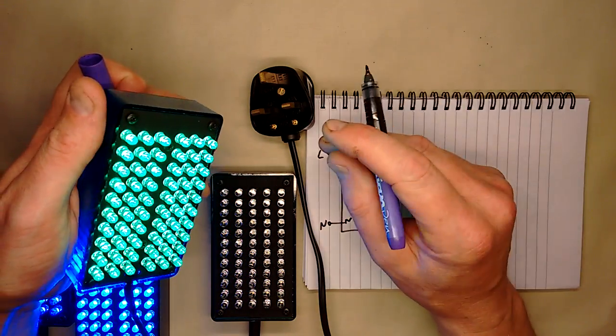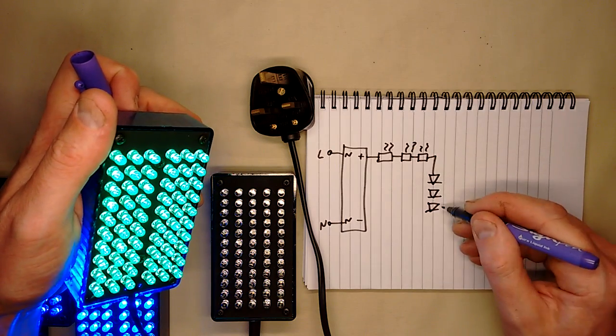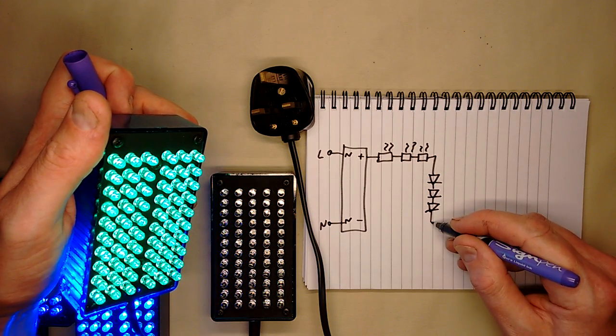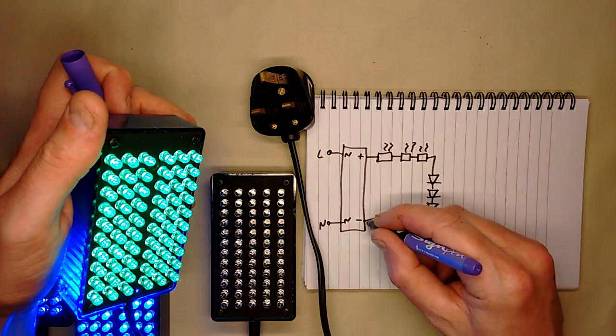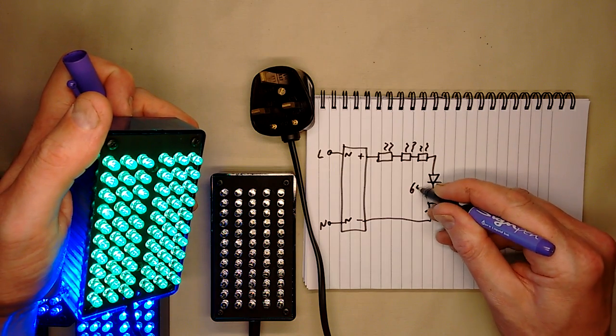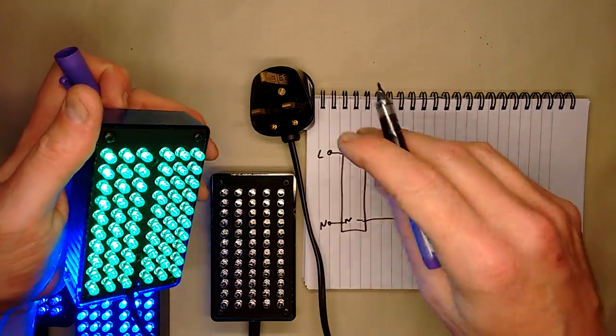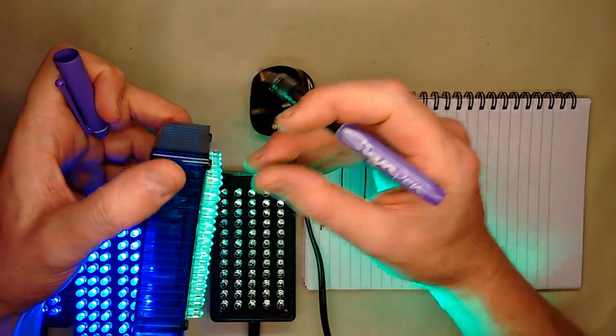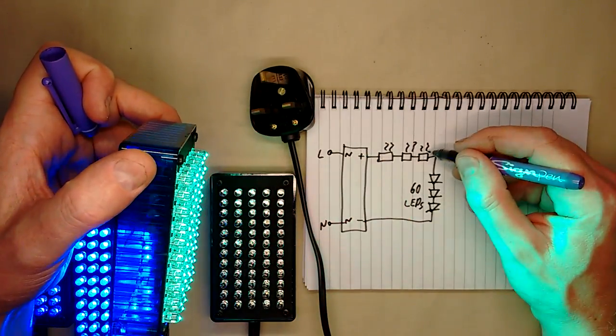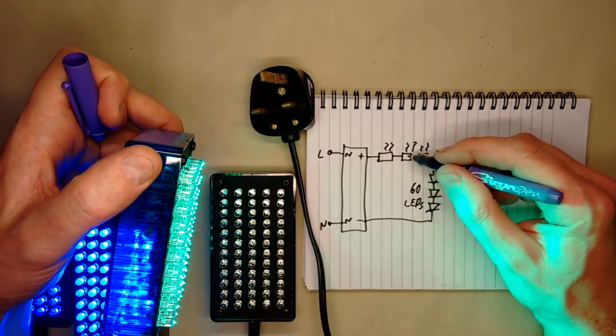Giving a combined forward voltage for the LEDs about 180 volts. So that means that just a rough RMS value, so that's about 60 LEDs which means that the combined forward voltage is about 180 volts which leaves about 60 volts to drop across the resistors, 20 volts each.